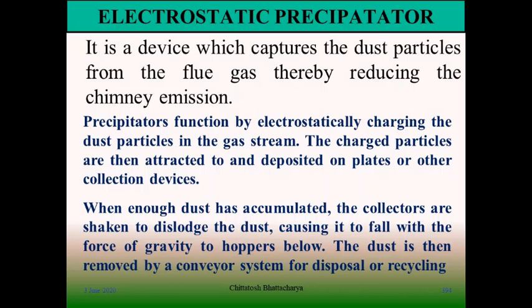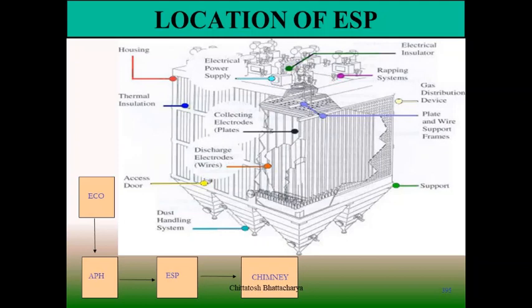When enough dust has accumulated, the collectors are shaken or wrapped to dislodge the dust, causing it to fall by gravity into a hopper, from where it is evacuated and passed through a conveyor system to dump it. The clean flue gas exits through the chimney. The ESP inlet is provided with a gas distribution device so that the velocity of the inlet can be distributed uniformly. There are discharge electrode wires, emitting electrode wires, and collecting electrode plates placed in parallel.